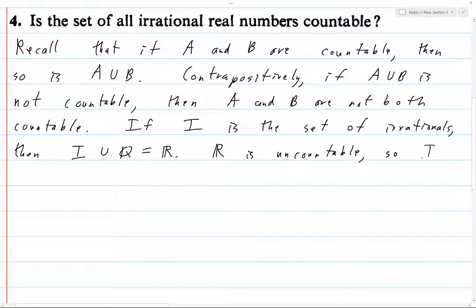So, I or Q is uncountable. At least one of these two sets is uncountable.